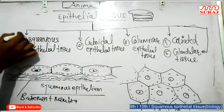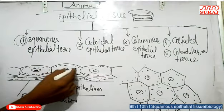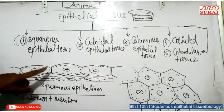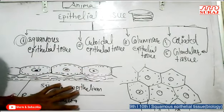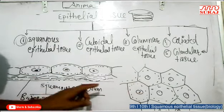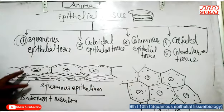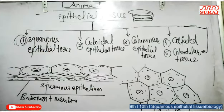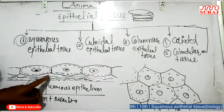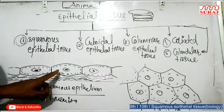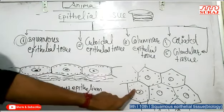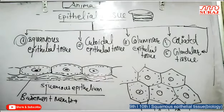First, we are going to discuss squamous epithelial tissue. In this tissue, thin, flat, and irregularly shaped cells are fit together like tiles closely packed on a floor. It is commonly known as pavement epithelium. The diagram shows both the vertical section and the surface view of the squamous epithelial tissue.